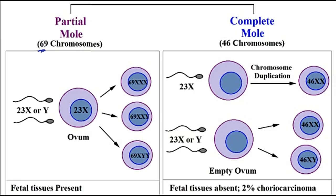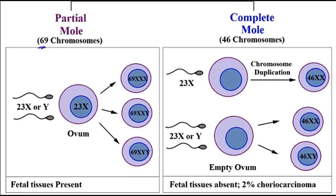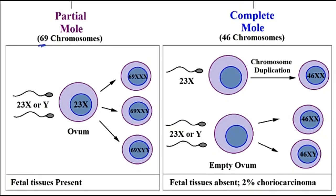One characteristic of partial moles is that there would be fetal tissue present with this type of molar pregnancy, versus the complete mole where there is no fetal tissue present. However, it does increase the risk of choriocarcinoma.